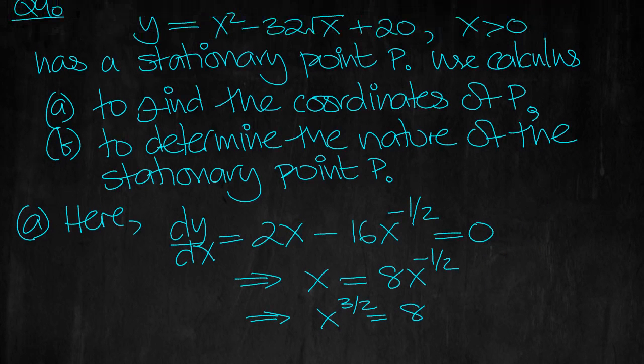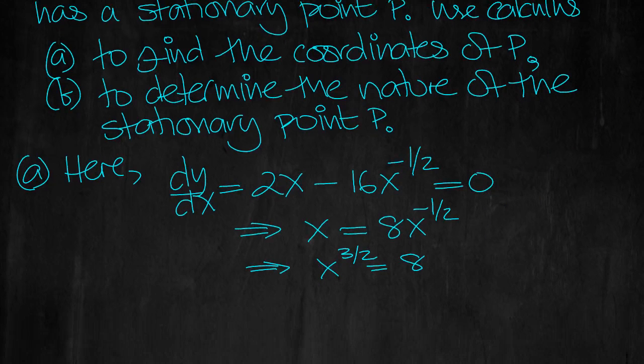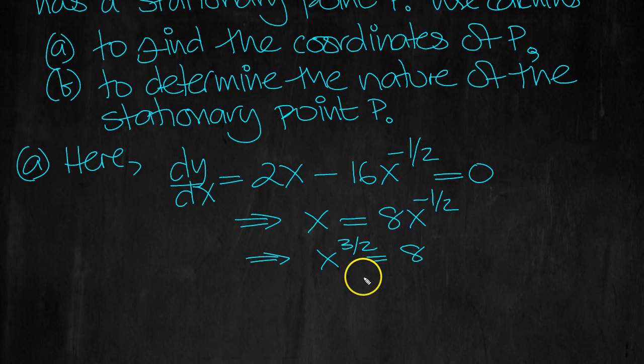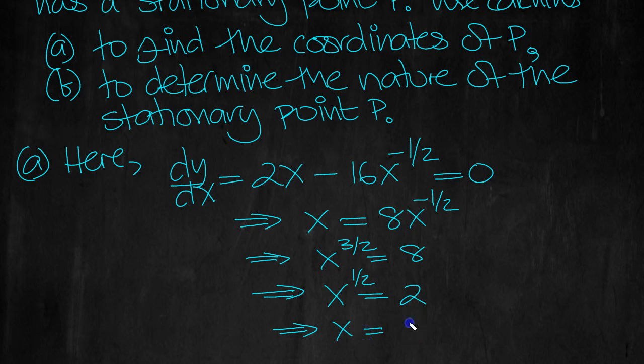Yeah, that looks good. So that tells us then, that x, take the third root, x to the 1/2. Cube root of this is a half, cube root of this is 2, and then square, x will equal 4.